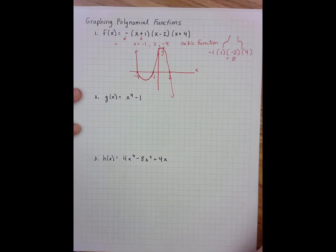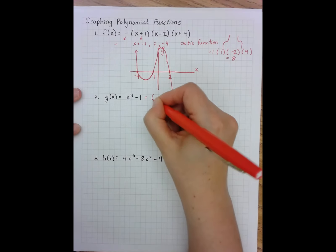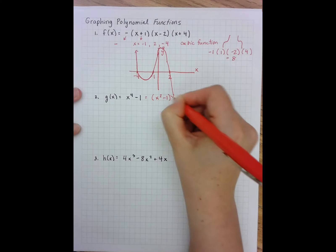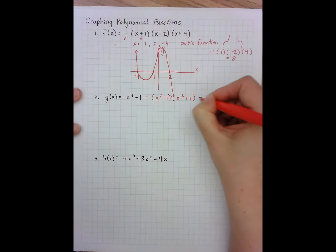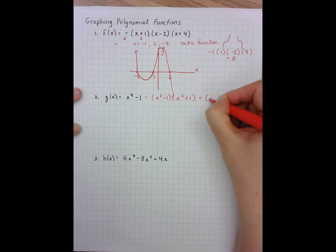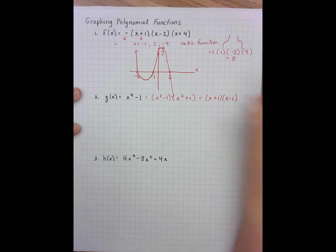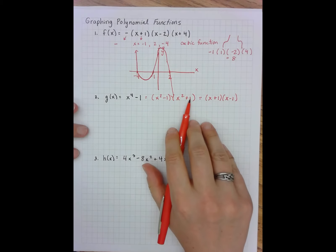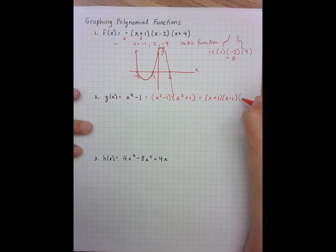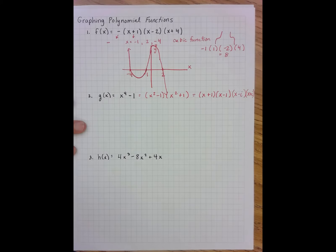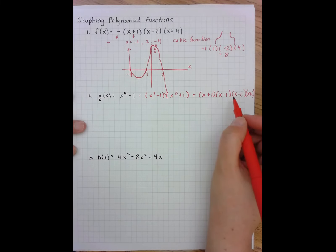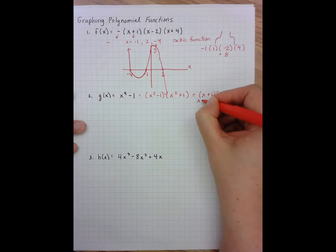Example two is not written in factored form, so I have to factor it. When I factor x⁴ minus one, I get x squared minus one times x squared plus one. Then x squared minus one factors as x plus one times x minus one, and x squared plus one factors using complex numbers as x minus i times x plus i.